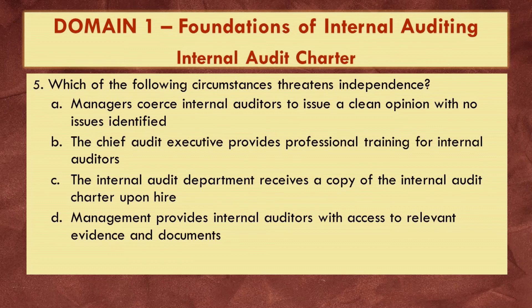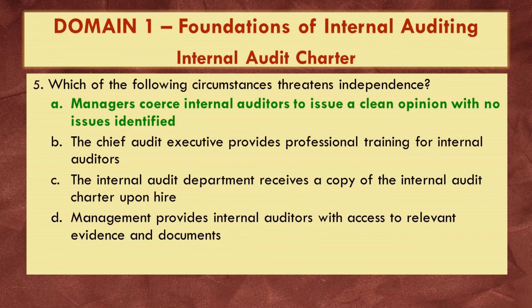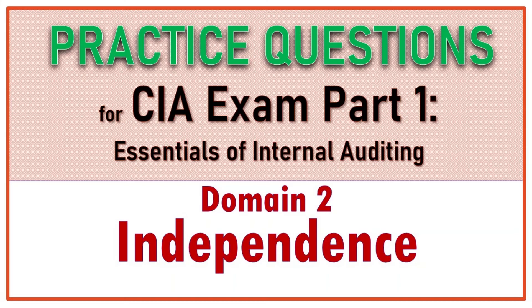Number five: which of the following circumstances threatens independence? A. Managers coerced internal auditors to issue a clean opinion with no issues identified. B. The chief audit executive provides professional training for internal auditors. C. The internal audit department receives a copy of the internal audit charter upon hire. D. Management provides internal auditors with access to relevant evidence and documents. The answer is A — management should not coerce or persuade internal auditors to write a specific conclusion. Options B, C, and D — continuing education, the internal audit charter, and unfettered access to documents — all support independence.